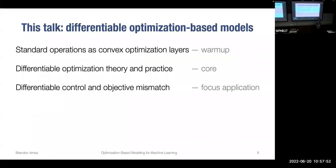This talk will tour through three broad areas: first, as a warmup, we show how existing operations in machine learning can be seen as solving convex optimization problems, to get a sense of expressivity. Second, we cover the mathematical foundations for differentiating through more general optimization layers. Third, we focus on control and reinforcement learning problems where this framework applies.